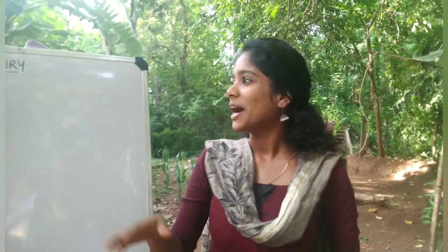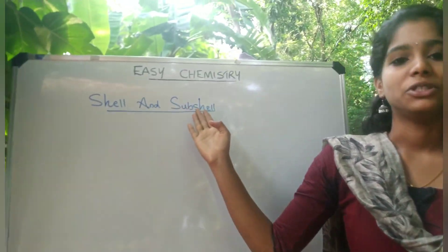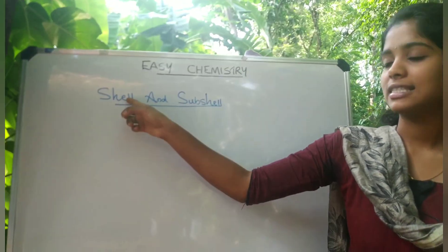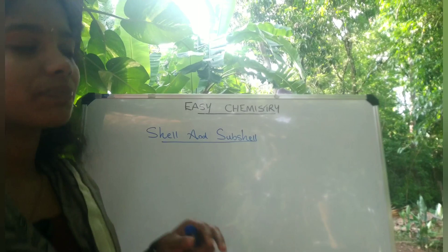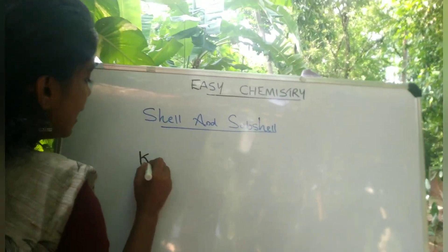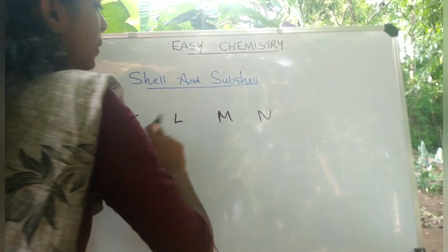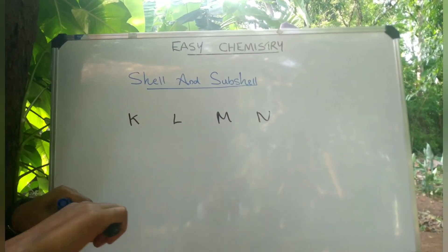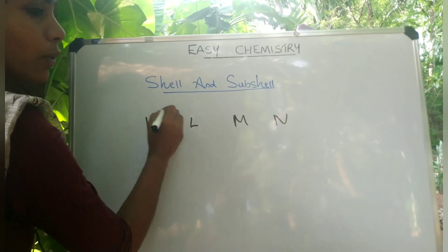In this video, we are going to talk about shell and sub-shell. We already discussed this portion of shell. What is shell? The shells are K, L, M, N. We already discussed this portion of shell, and I will show you another shell number.